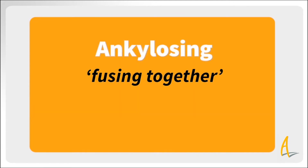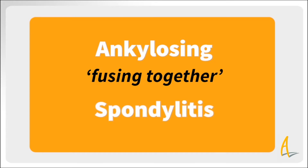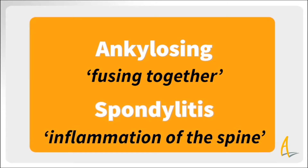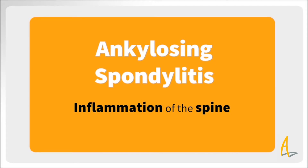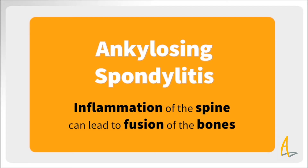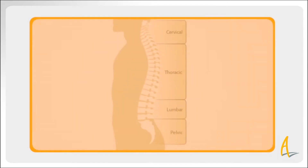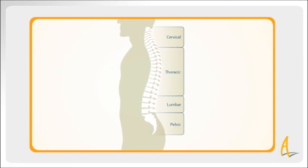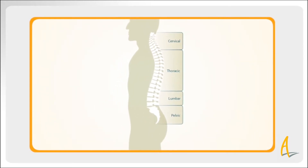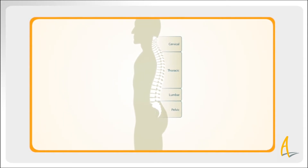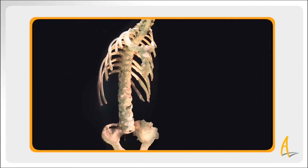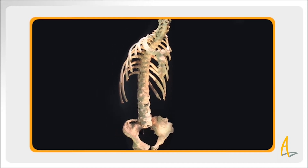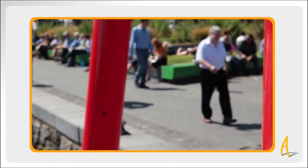Ankylosing means fusing together and spondylitis means inflammation of the spine, so the name ankylosing spondylitis describes how inflammation of the spine in AS can lead to fusion of the bones. If untreated, AS can also lead to new bone formation in your spine, so that your vertebrae — the individual bones stacked one on top of the other in your spine — become fused together and lose their ability to move. Over time, this can cause your spine to become rigid and curved, giving a bent forward posture, which is known as kyphosis.